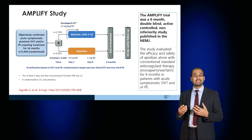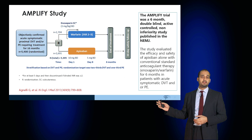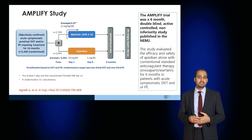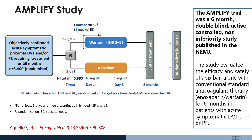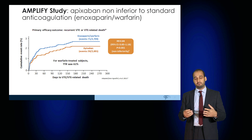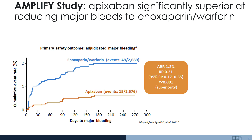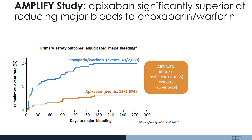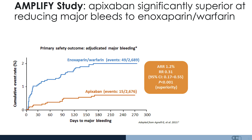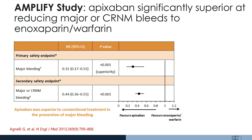The AMPLIFY study was a six-month double-blind active-controlled non-inferiority study published in the New England Journal of Medicine, evaluating the efficacy and safety of apixaban alone against conventional standard anticoagulant therapy — enoxaparin and warfarin — for six months. Patients were randomized to either the warfarin and enoxaparin arm or the apixaban arm. The AMPLIFY study demonstrated that apixaban was non-inferior to standard anticoagulation, and also that apixaban was significantly superior at reducing major bleeds compared to enoxaparin. Moreover, apixaban was significantly superior at reducing major or clinically relevant non-major bleeds compared to enoxaparin or warfarin.